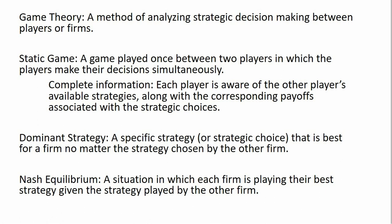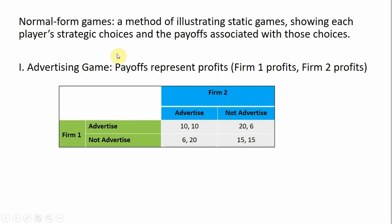So keep those two ideas in mind. We're going to start with an advertising game. This is referred to as a normal form — just a method of illustrating static games, showing the choices of players and the payoffs associated with those choices. We have two firms: firm one on the left, which can decide to advertise or not advertise, and firm two on the top, which can also decide to advertise or not advertise its product.